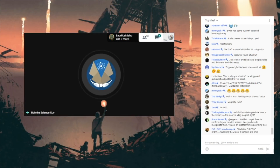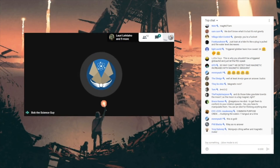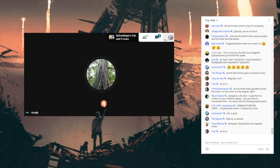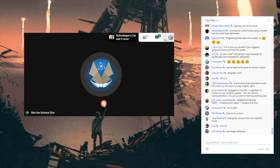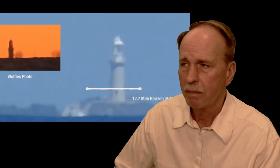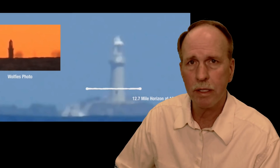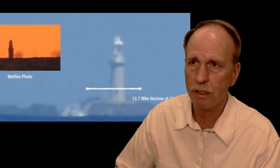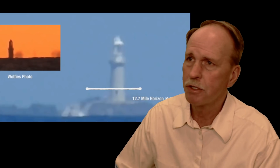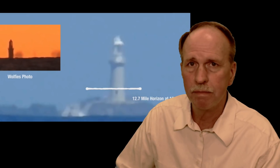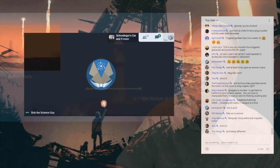Question number three: how do you falsify the flat Earth? You falsify the globe by showing there's no curvature. How do you falsify the flat Earth? By showing there is a curve. Good answers — at least we're getting a straight answer. You falsify the globe Earth by showing no curve and you falsify the flat Earth by showing there is a curve. My first video, November 28th last year — there's the curve, Chief. Flat Earth is falsified.